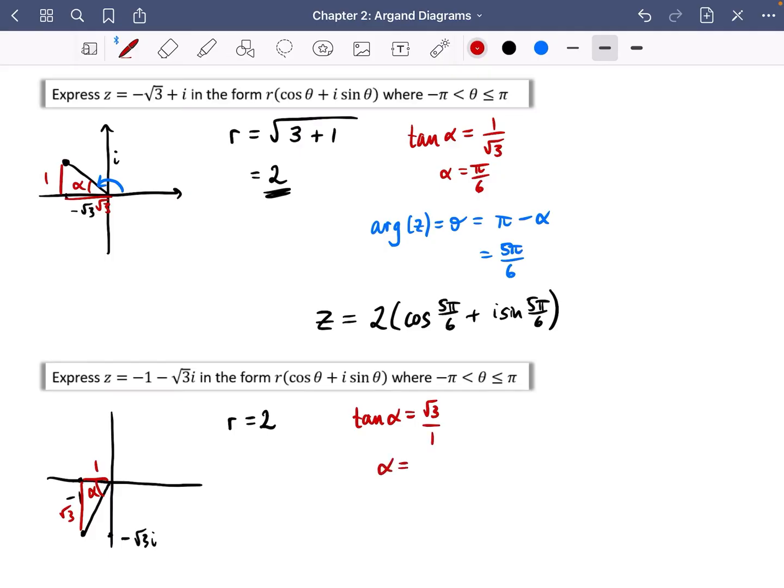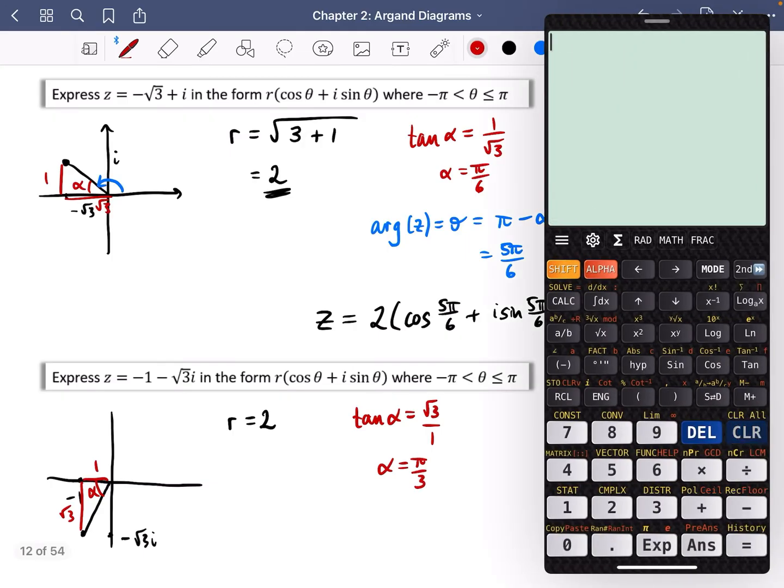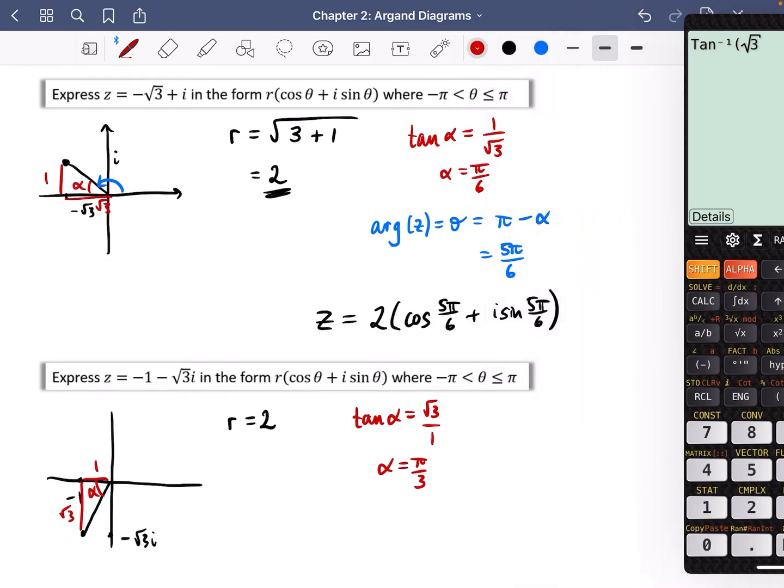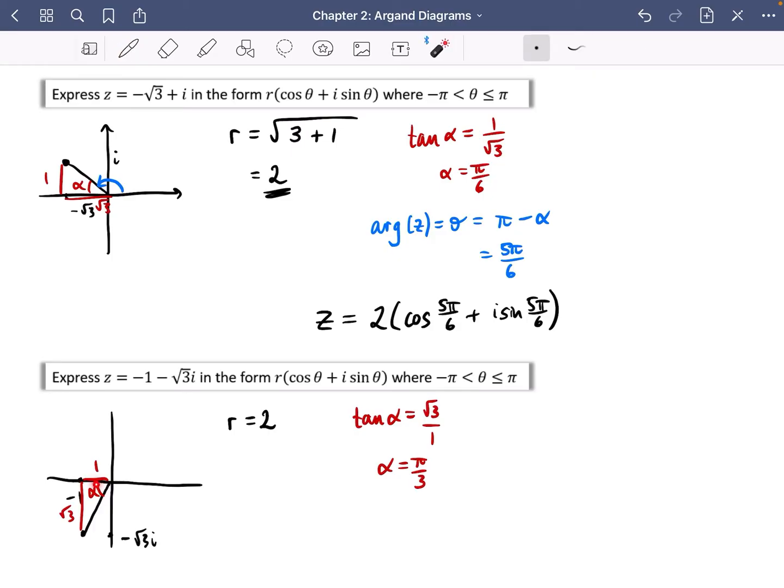So we know that tan alpha is the opposite over the adjacent, which is root three. And so you should know this at the top of your head, alpha is going to be pi over three or 60 degrees, but I'll just prove that to you. So we'll do the inverse tan of root three, we do get pi over three. So this is pi over three, this angle here is going to be two pi over three, that's pi minus pi over three, which is obviously just two thirds pi.